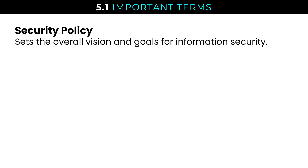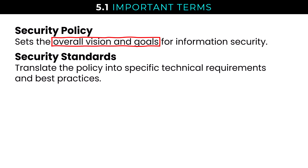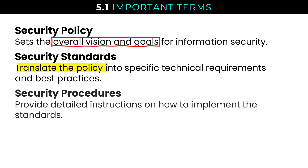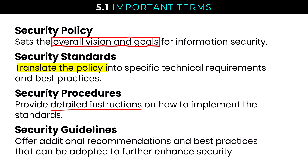The security policy sets the overall vision and goals for information security. Security standards translate the policy into specific technical requirements and best practices. Security procedures provide detailed instructions on how to implement the standards. And security guidelines offer additional recommendations and best practices that can be adopted to further enhance security. We're going to work through these four in the order they appear in the syllabus.